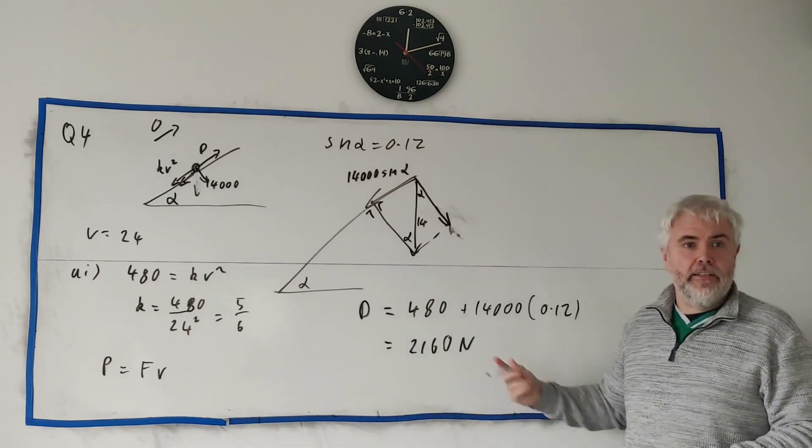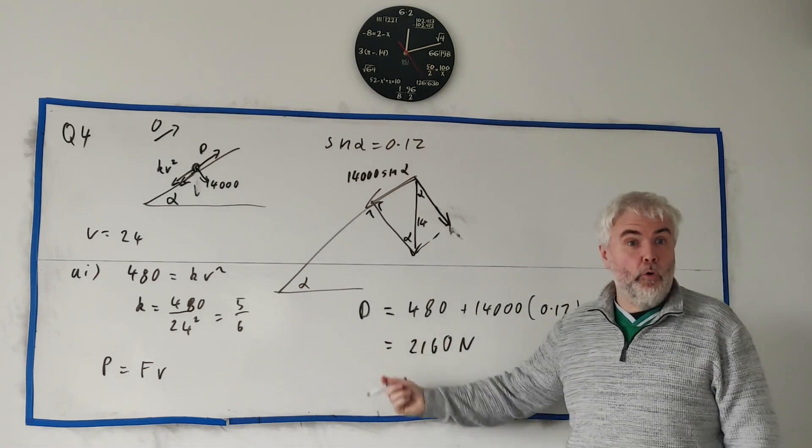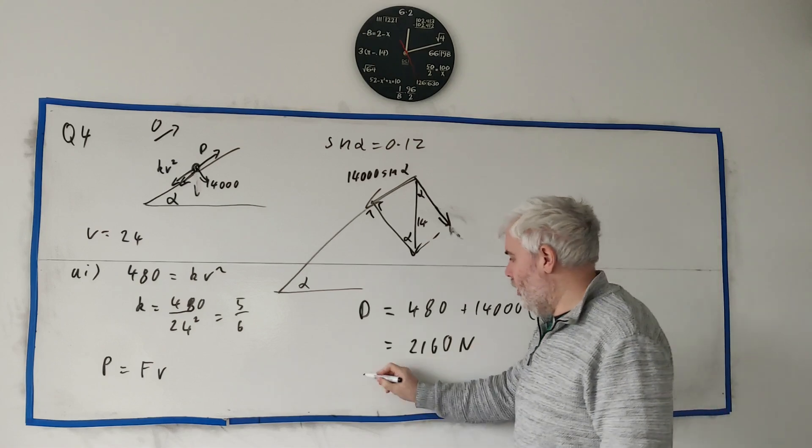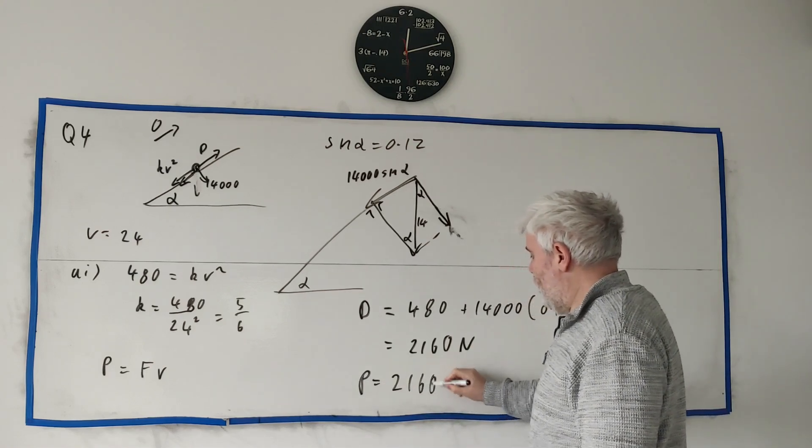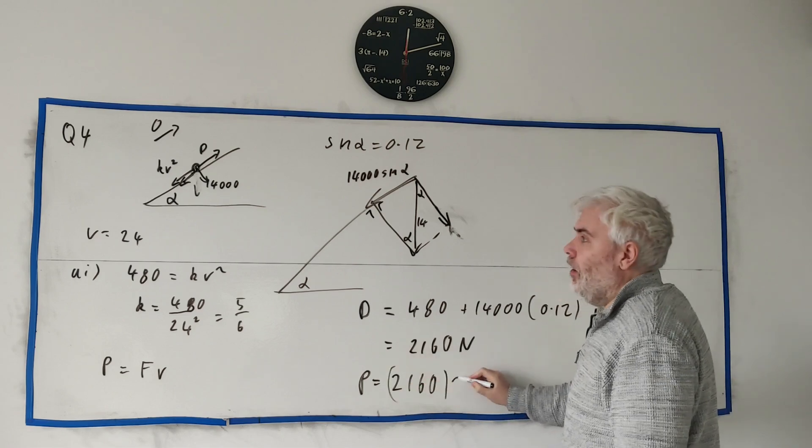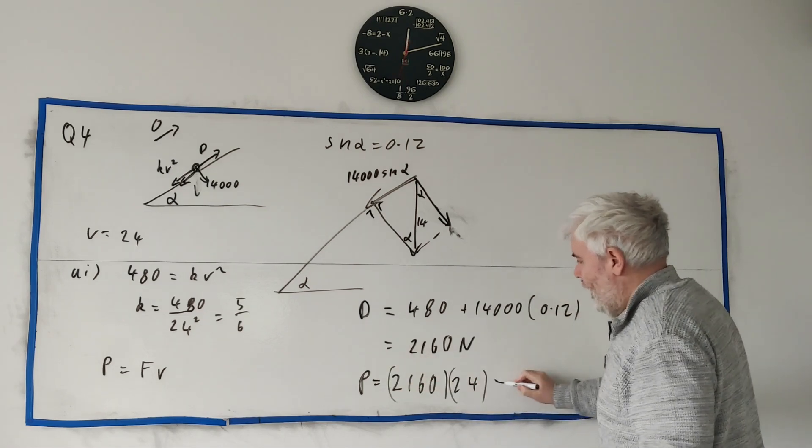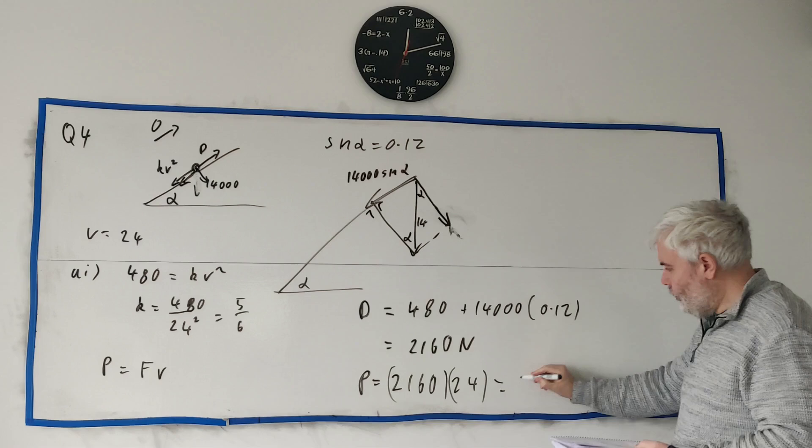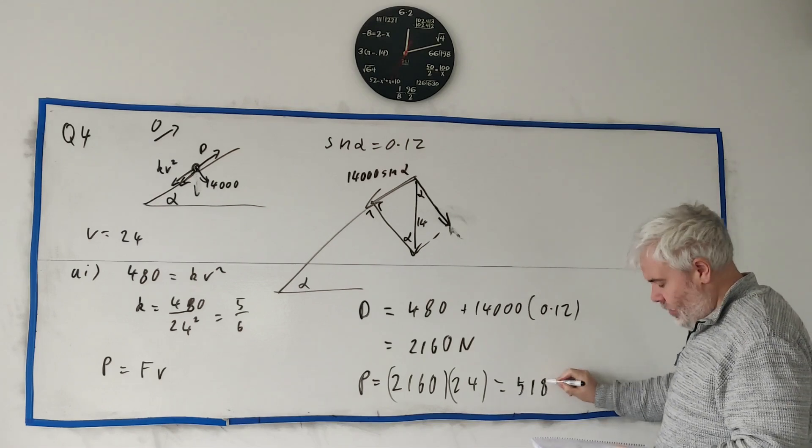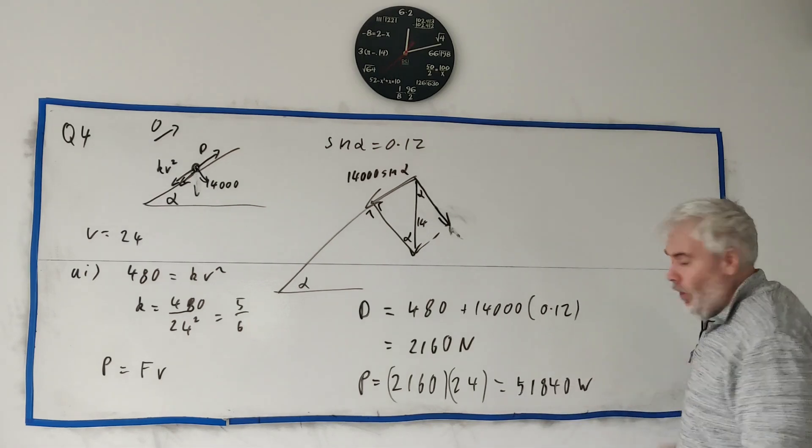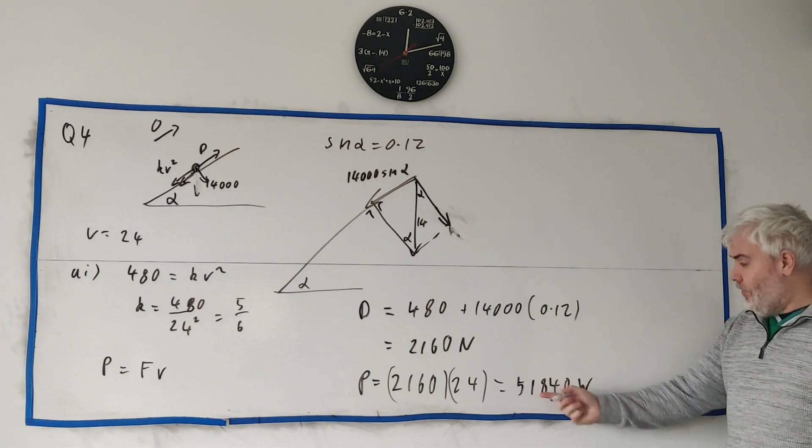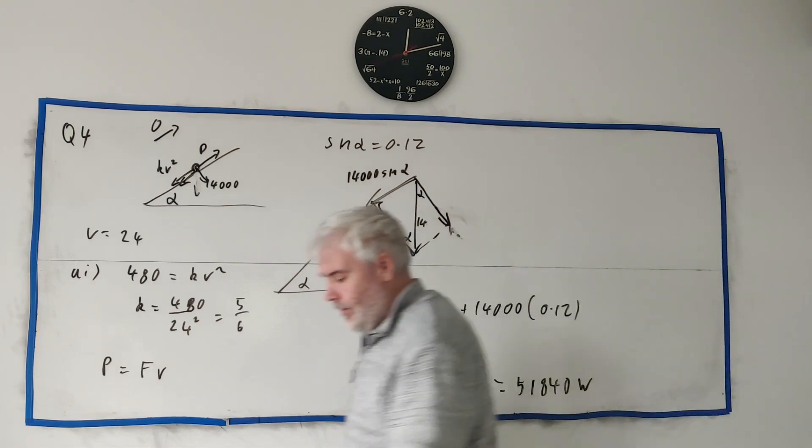Not sine alpha. We know sine alpha. Put all that into a calculator. We find that D equals 2,160 newtons. You will lose a mark. That's not the answer. They didn't ask you for the force. They asked you for the power. Power equals the force multiplied by the velocity, 24. And that equals 51,840 watts. Or you could change that into kilowatts, 51.8 kilowatts.